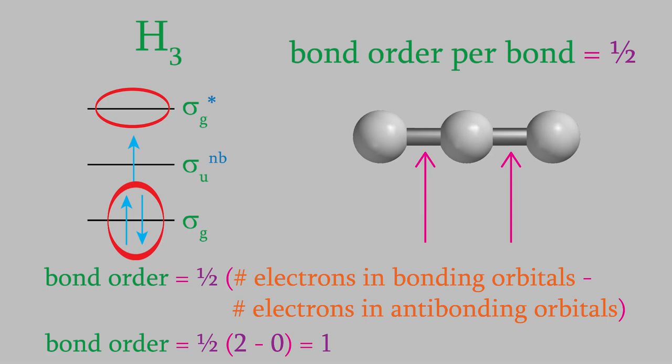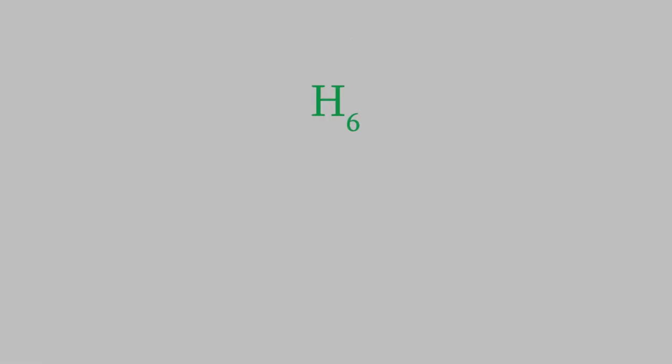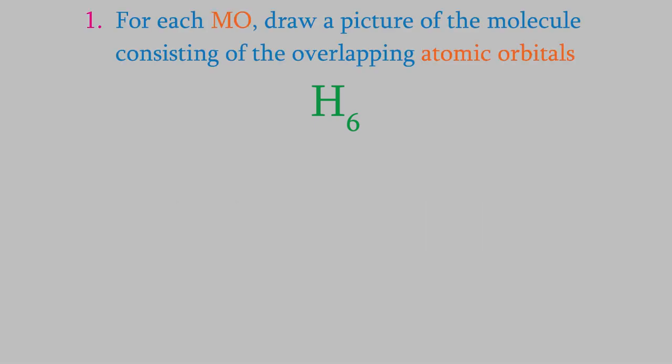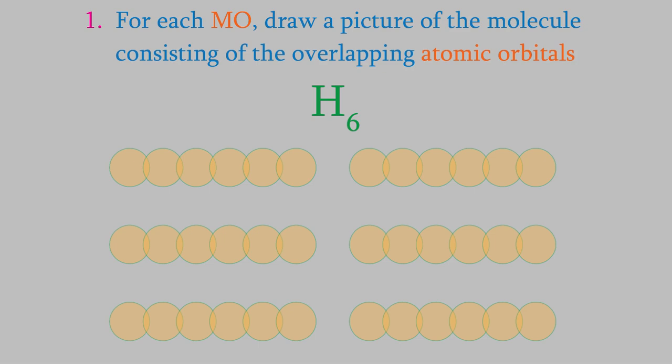Let's try another example: another linear molecule, H6. H6 consists of six hydrogen atoms, each with a 1s atomic orbital. So the H6 molecule has six molecular orbitals. Now we'll apply the method we just used for the H3 molecule. First, for each molecular orbital, we draw a picture of the six atomic orbitals of the molecule. H6 has six different MOs, so we draw six different pictures, each of which consists of six overlapping circles representing the 1s atomic orbitals.